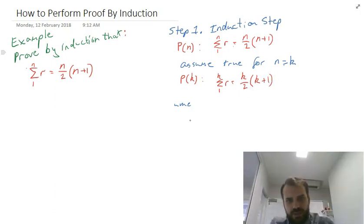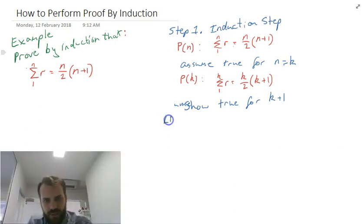Now that we've done that we need to show it's true for k plus 1. And this is the trick. This is the trick to it. So on the left hand side, I'm going to move myself out of the way here. On the left hand side of my equation I'm going to use this formula n over 2 n plus 1 or k over 2 k plus 1.